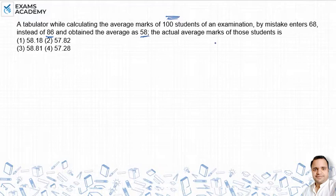तो हमसे पूछ रहा है कि actual में क्या average होगा वो बताइए। जो number enter किया गया वो क्या था - 68 था। जो number होना चाहिए था वो क्या है - 86. It means जो enter हुआ वो कम है और जो enter करना चाहिए था वो जादा है